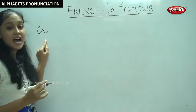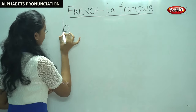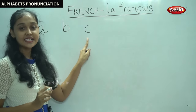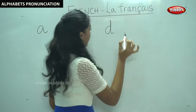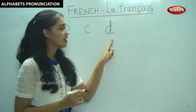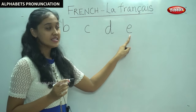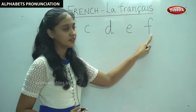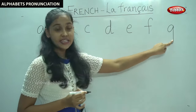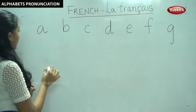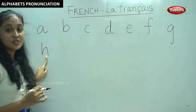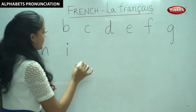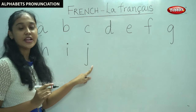A is pronounced as A. The letter B is pronounced as Bay. The letter E is pronounced as A. The letter G is pronounced as J in French. H is pronounced as Hush. The letter I is pronounced as E. The letter J is pronounced as G.